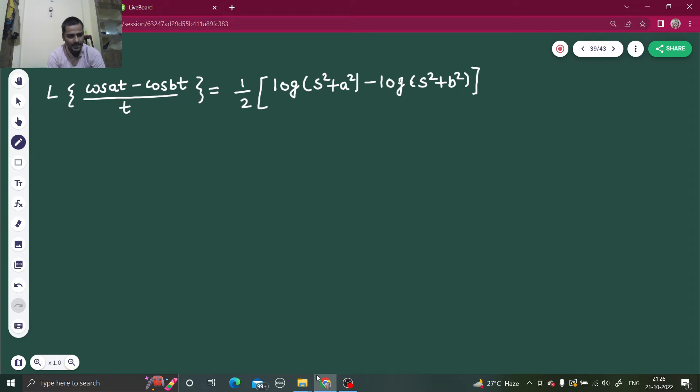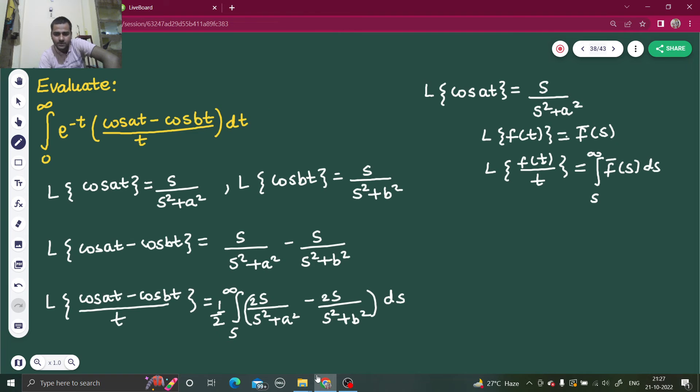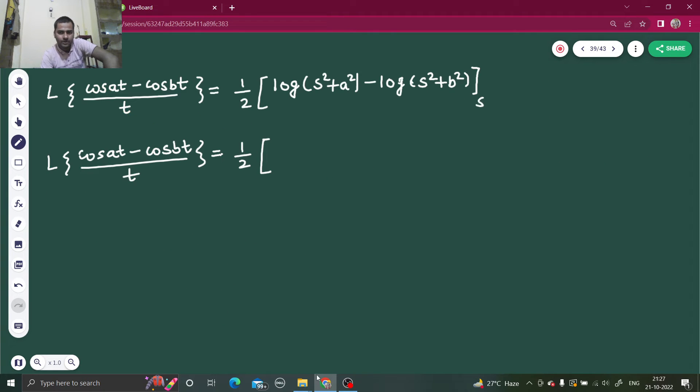Log a minus log b is log a by b. So here we go from s to infinity, that is important to write, so you will get log s square plus a square divided by s square plus b square.